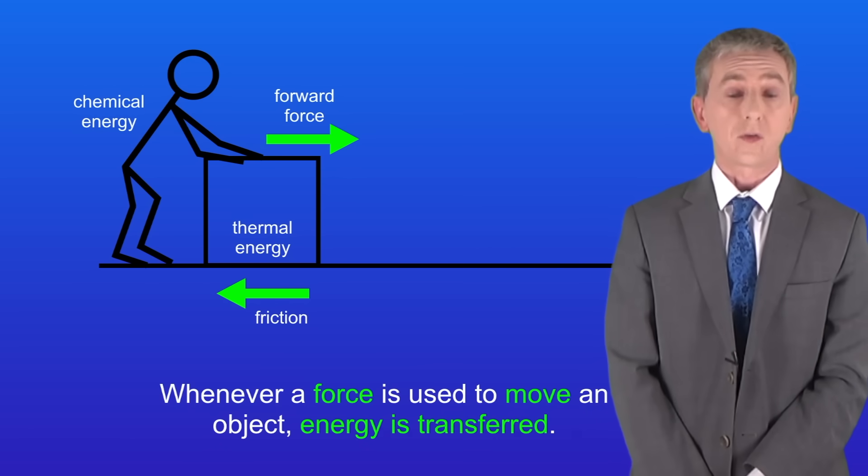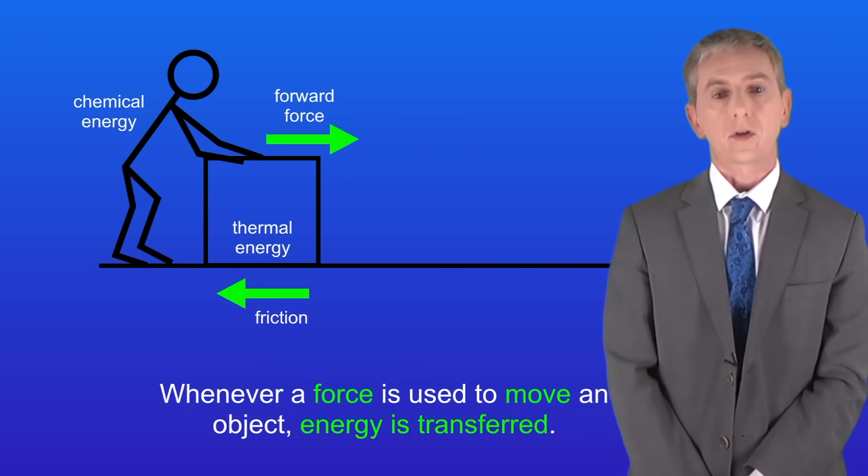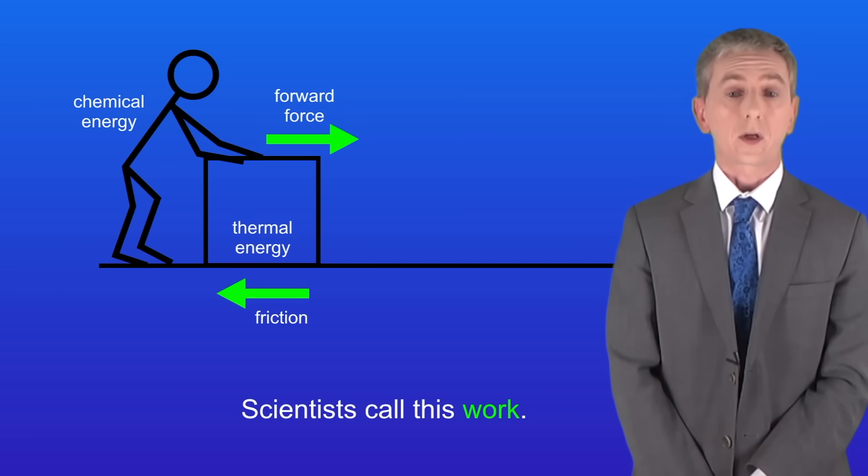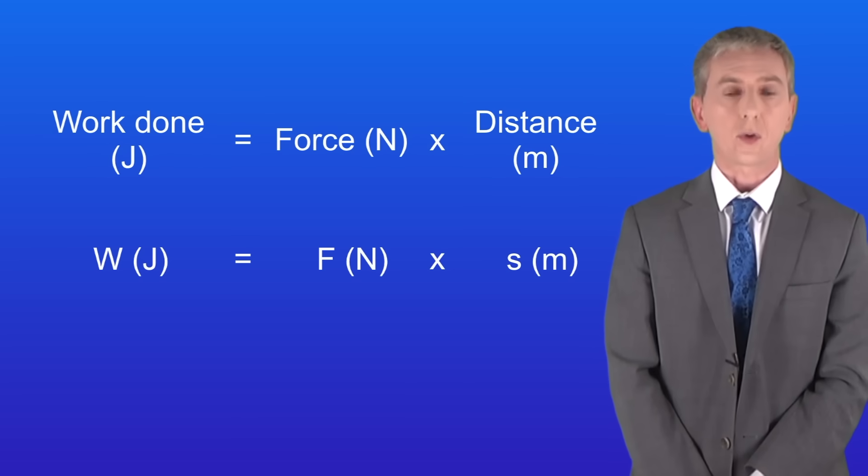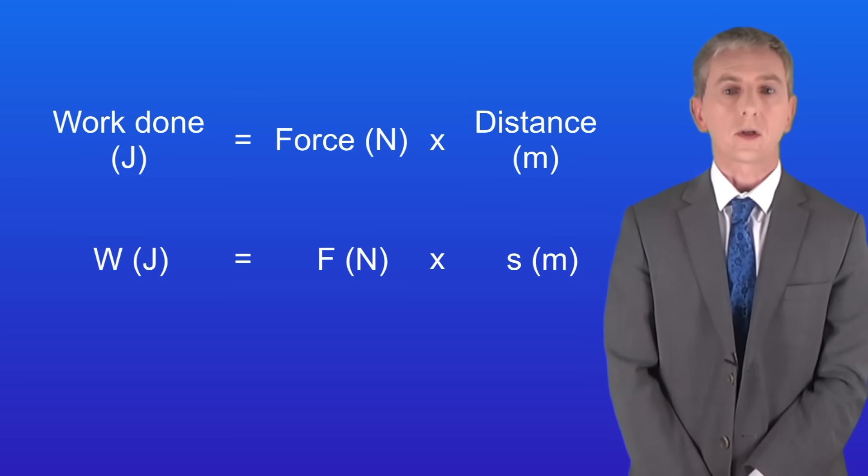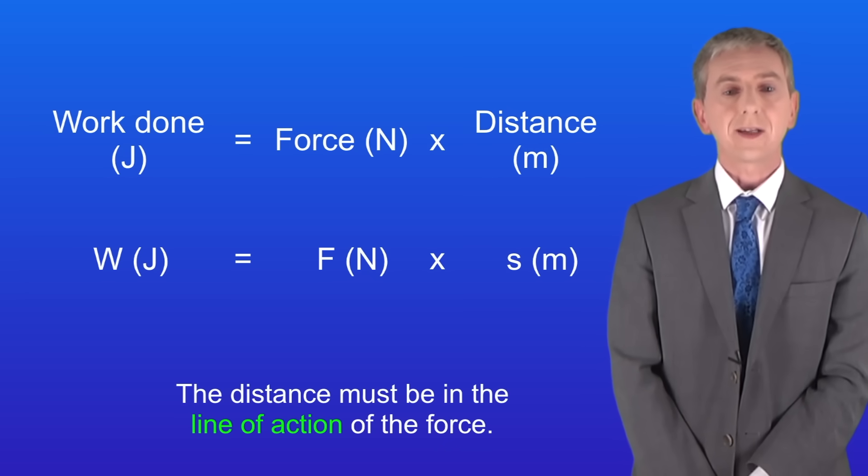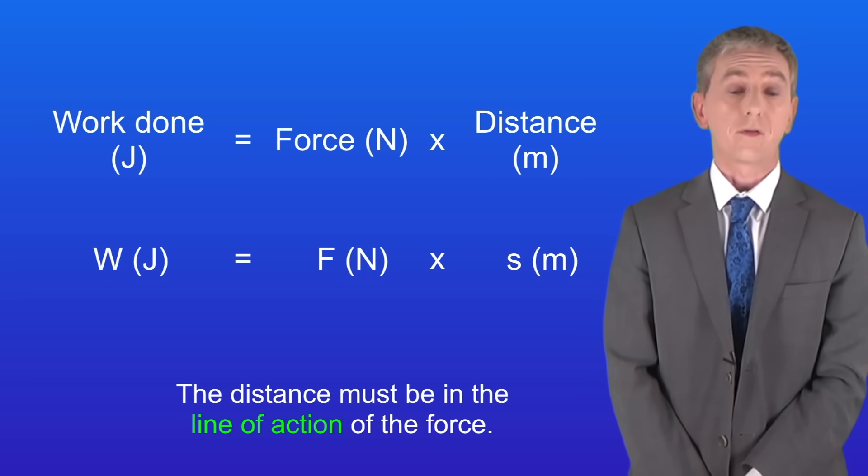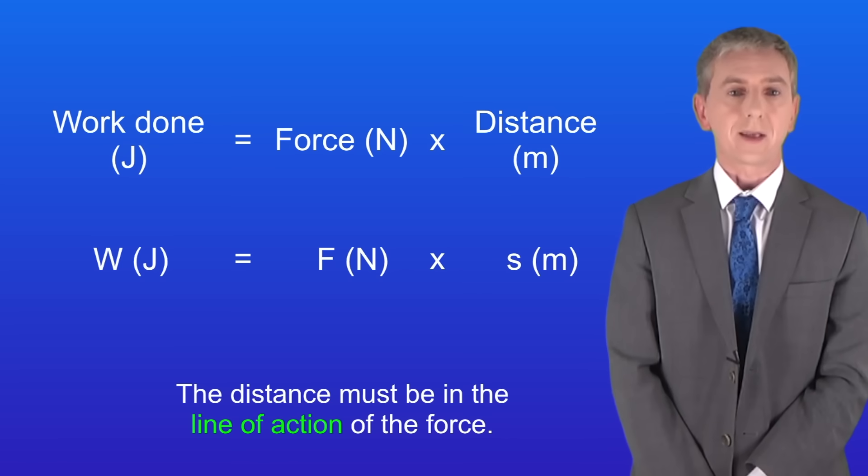Now whenever a force is used to move an object energy is transferred. Scientists call this work and we calculate work using this equation. Work done in joules equals the force in newtons multiplied by the distance in meters. And a key point is that the distance must be in the line of action of the force and we're going to see what that means later.